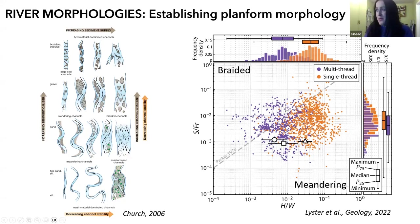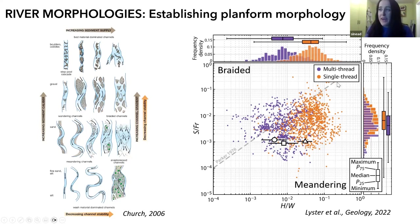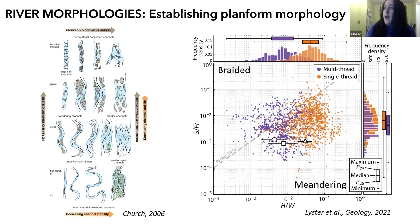I plotted them all, splitting them initially into single-thread rivers and multi-thread rivers. You can see that there are a lot of multi-thread rivers that sit below Gary Parker's line. So we thought the planform stability field doesn't quite work — we might need to move this line and readjust it.